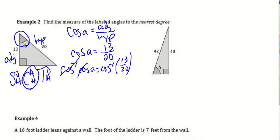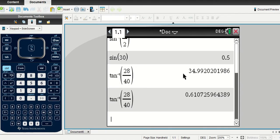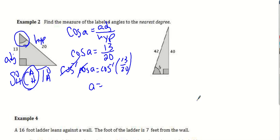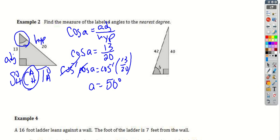We're going to take the cosine inverse of both sides. These are going to undo. Then we take our calculator. Menu, trig, cosine inverse, 13 over 20. And there's our answer. We're going to the nearest degree, so that would be 50 degrees. You guys are going to try this one on your own.